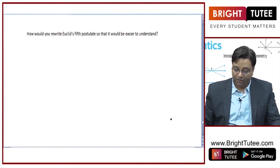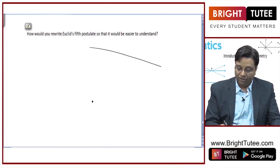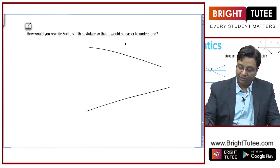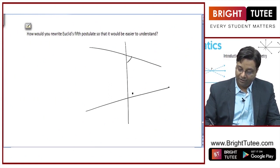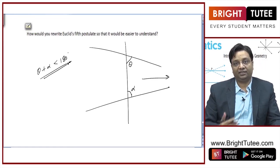How would you rewrite Euclid's fifth postulate so that it would be easier to understand? It is left to you to write this because everybody can write it differently. You just need to say that these two are co-interior angles and where the sum of co-interior angles is lesser than 180, the lines will meet on that side.